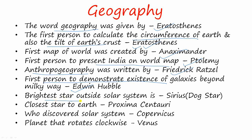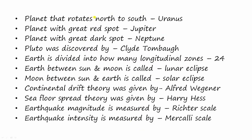The brightest star outside our solar system is Sirius, also called the dog star. The closest star to earth is Proxima Centauri. The solar system was discovered by Copernicus. The planet that rotates clockwise is Venus. The planet that rotates north to south is Uranus. The planet with the Great Red Spot is Jupiter. The planet with the Great Dark Spot is Neptune. Pluto was discovered by Clyde Tombaugh.